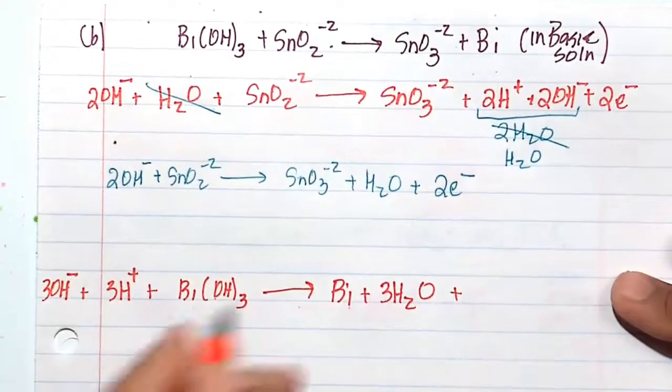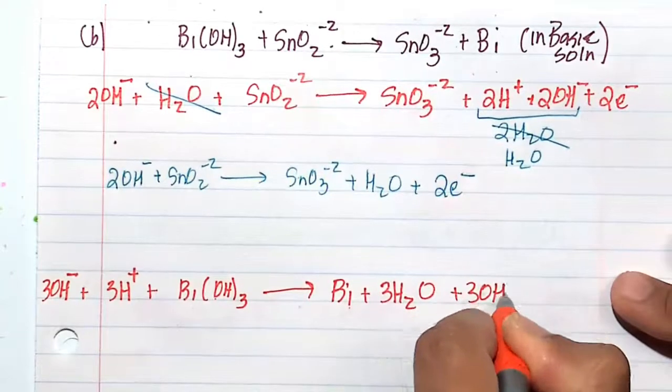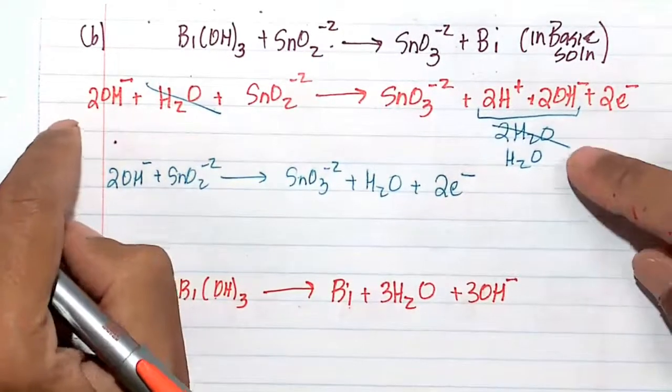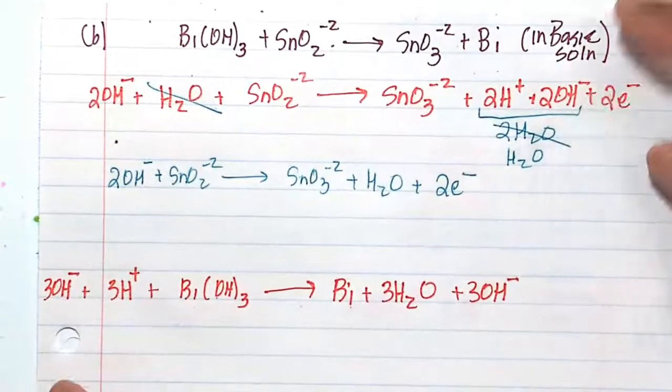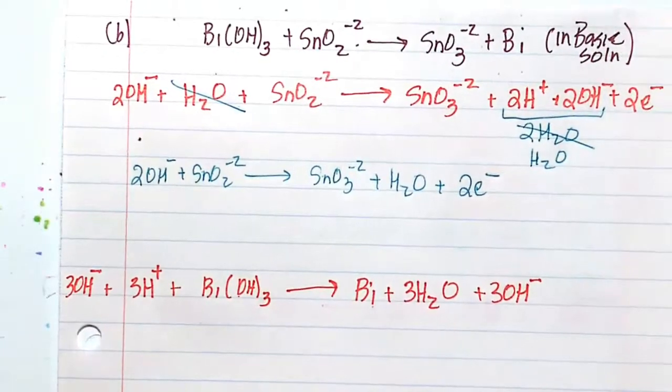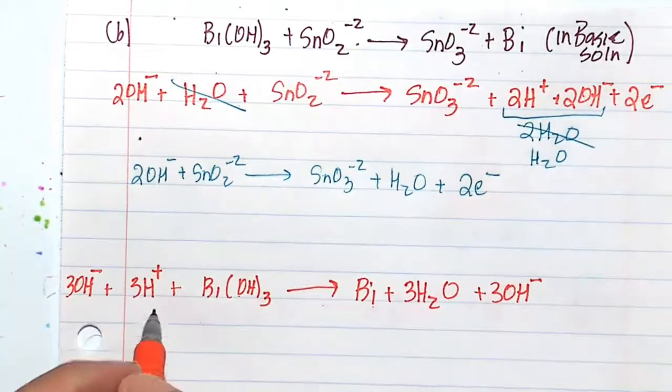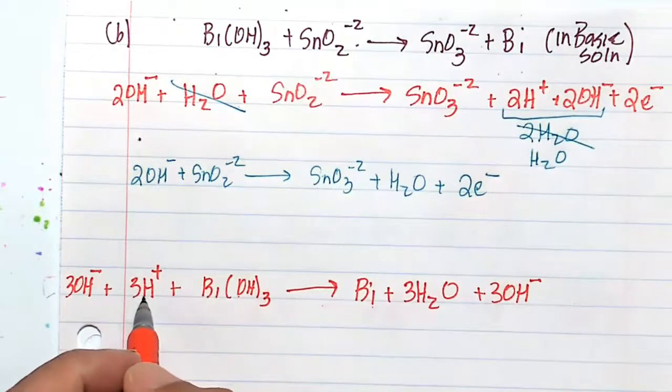I add three hydroxide here. So I got to add three hydroxide there, right? Whatever hydroxides I add, I got to add the equivalent amount to the other side. That's just how you do it when you balance redox reactions in base to sort of get rid of the hydrogen ion.